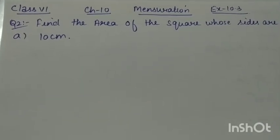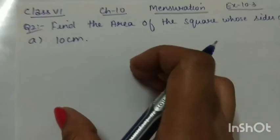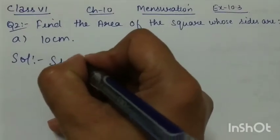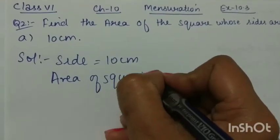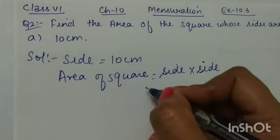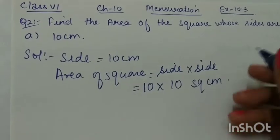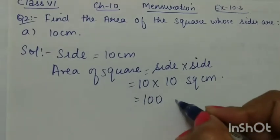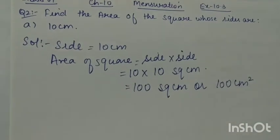Let's start question number 2 of Exercise 10.3. The question is: find the area of a square whose sides are given. Part a: the side is 10 centimeters. Area of a square is side multiplied by side, so this will be 10 multiplied by 10 square centimeters, which equals 100 square centimeters — or you can write 100 centimeter square; it's one and the same thing.